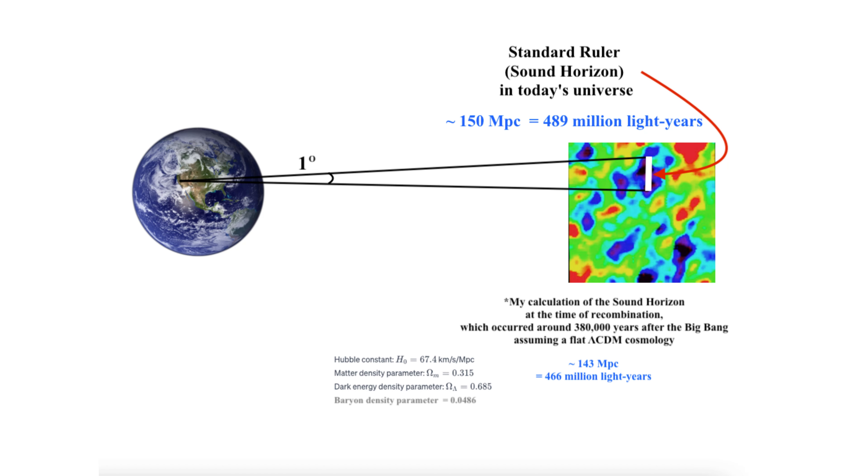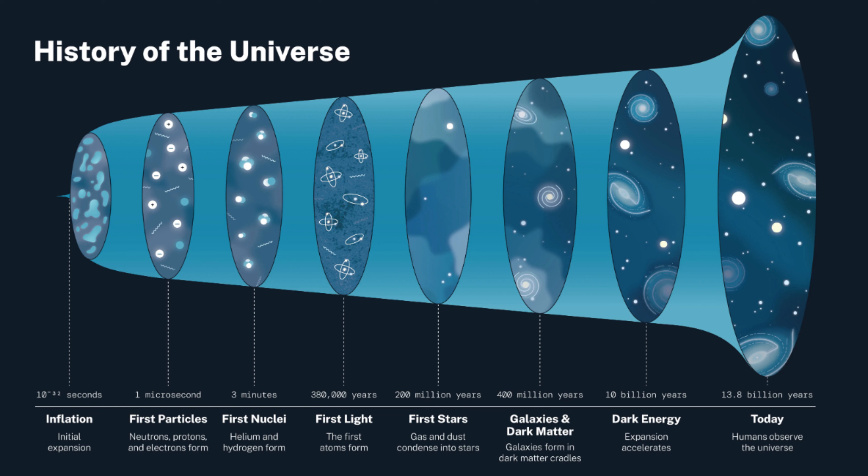Note also, calculations based on inflation theory predicted this angular size to be around one degree across the sky. So while inflation theory doesn't predict a single fixed level of flatness, it suggests that the universe should be significantly flattened compared to its initial state. The observed near flatness of our universe strongly supports the predictions and continues to be an active area of research in cosmology.